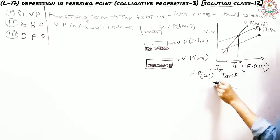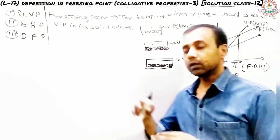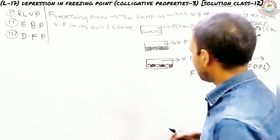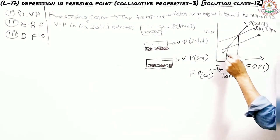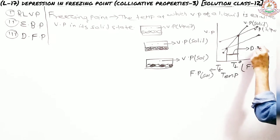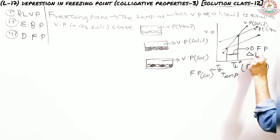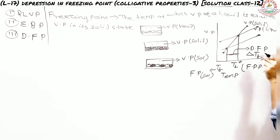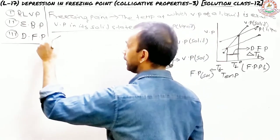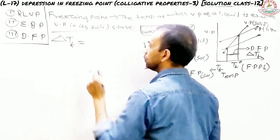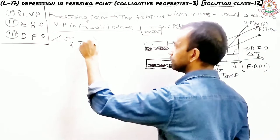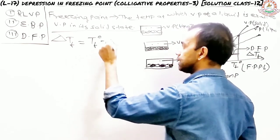Now, this difference between the two freezing points is called depression in freezing point, represented by ΔTf. So depression in freezing point of the solution is equal to ΔTf. We have ΔTf, which is equal to Tf° minus Tf — the freezing point of the pure solvent minus the freezing point of the solution.